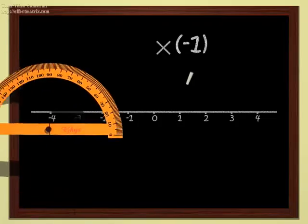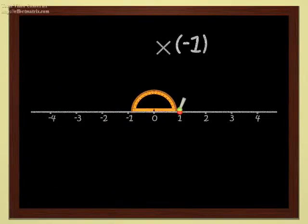Multiplying by minus one is very easy. Each point is sent to the symmetrical point with respect to the origin. In other words, we do a half turn, a rotation by 180 degrees, if you like.